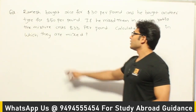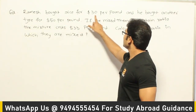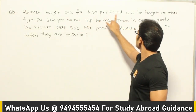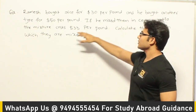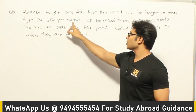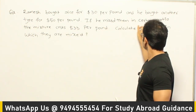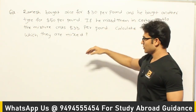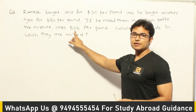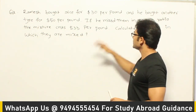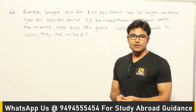Ramesh bought rice for $30 per pound and he bought another type for $50 per pound. If you mix them in a certain ratio, the mixture costs $33 per pound. Calculate the ratio in which they are mixed.